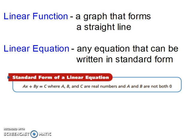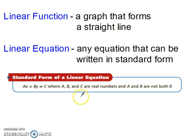A linear function is a graph that forms a straight line. A linear equation is any equation that can be written in standard form. The standard form of a linear equation is ax plus by equals c, where a, b, and c are real numbers, and a and b are not both zero — one of them could be, but not both.